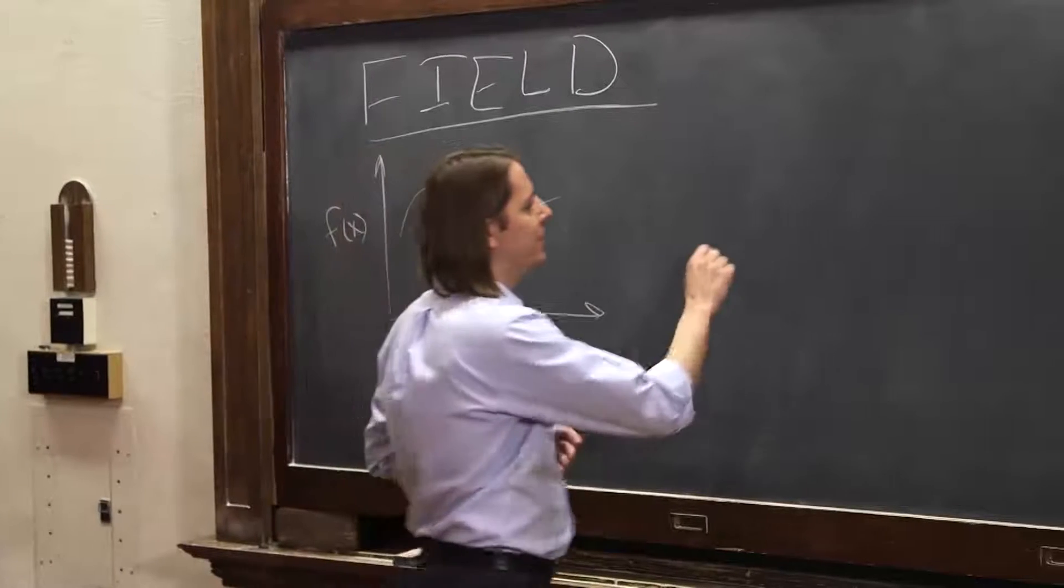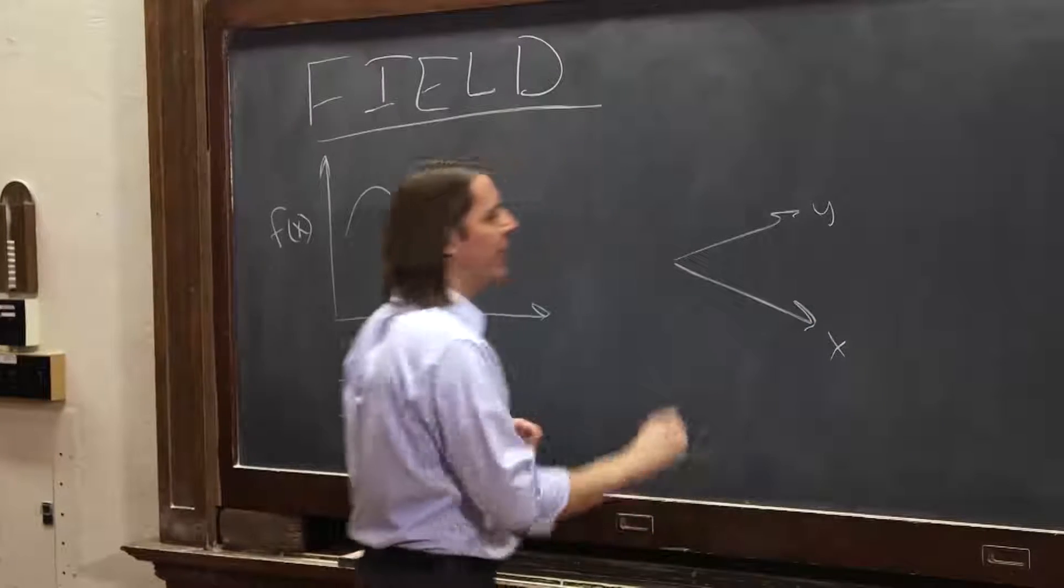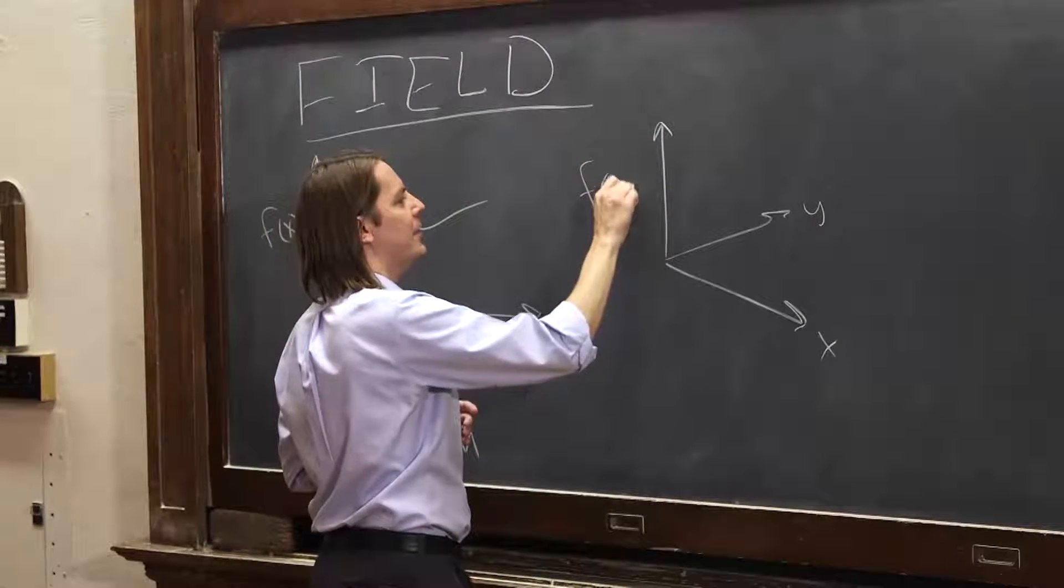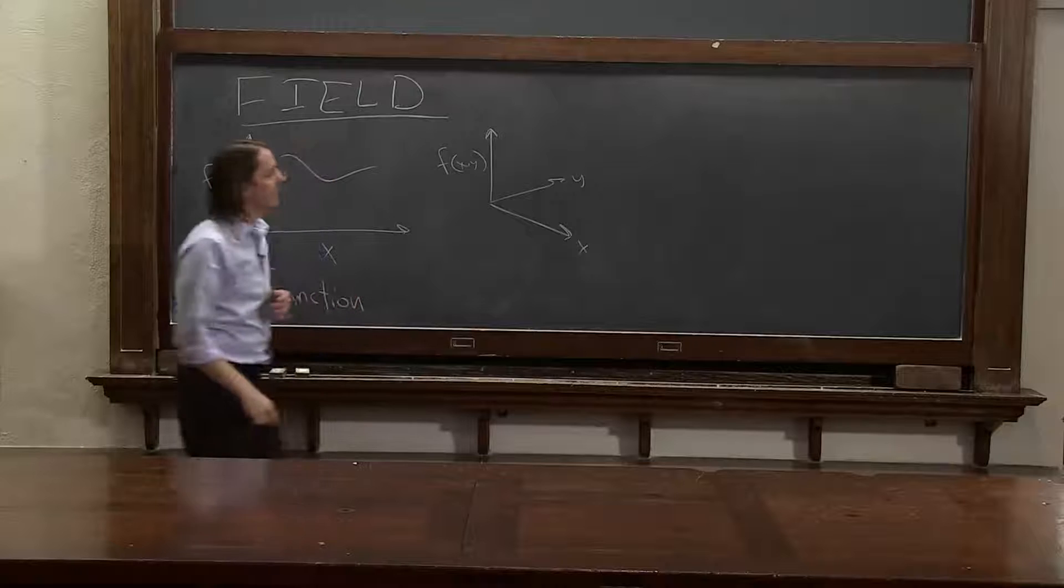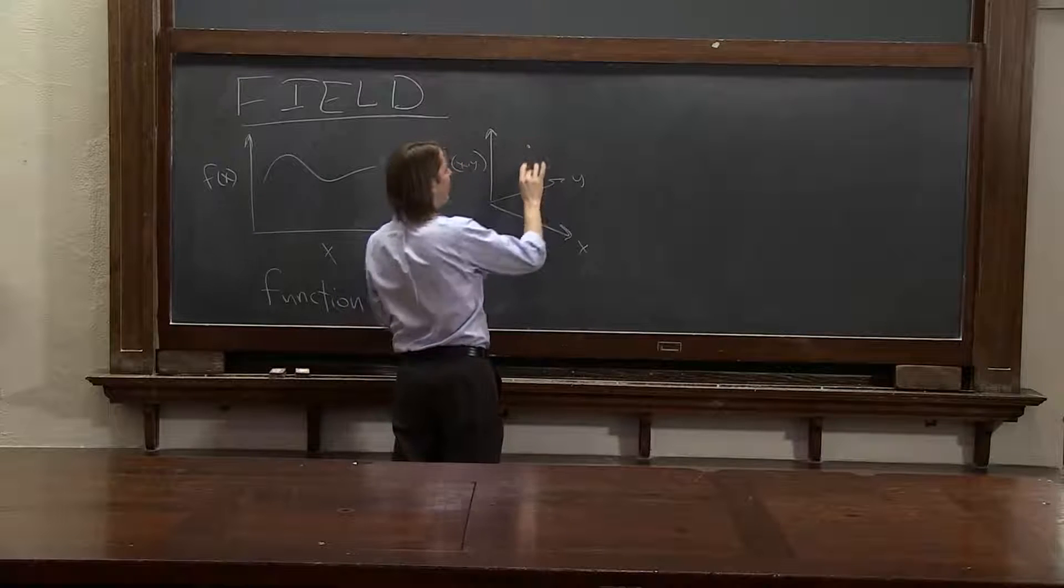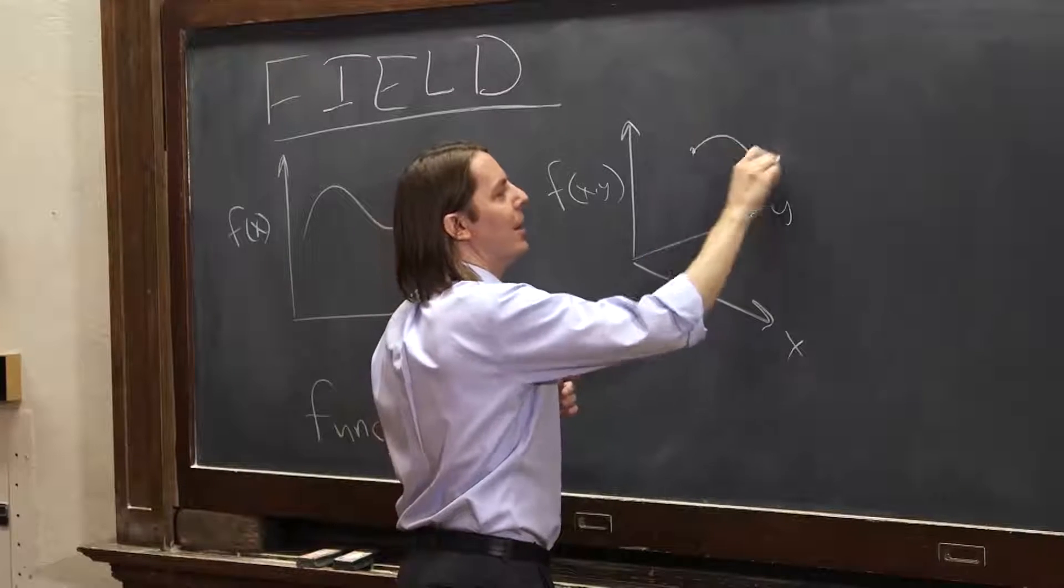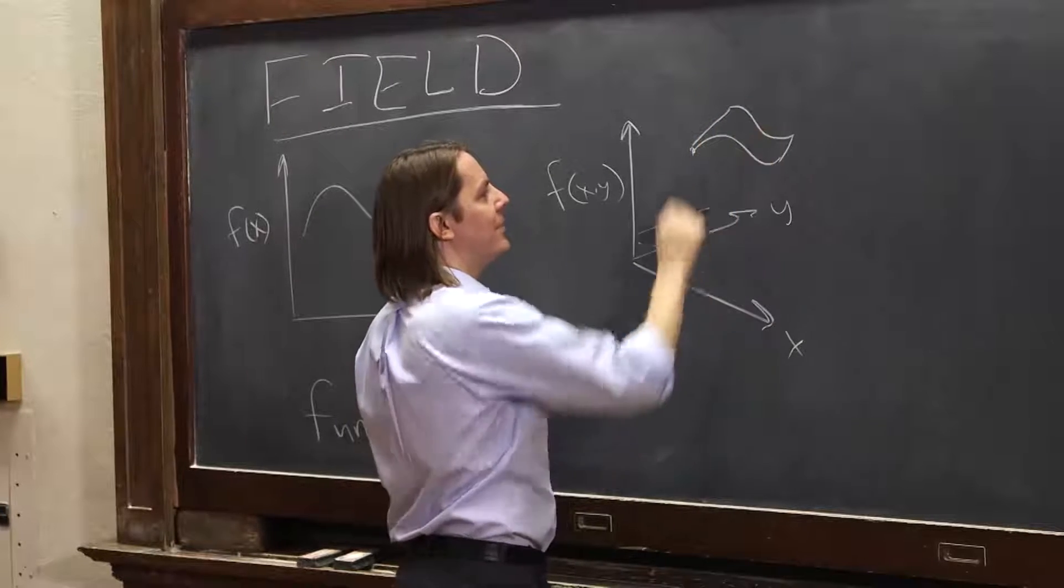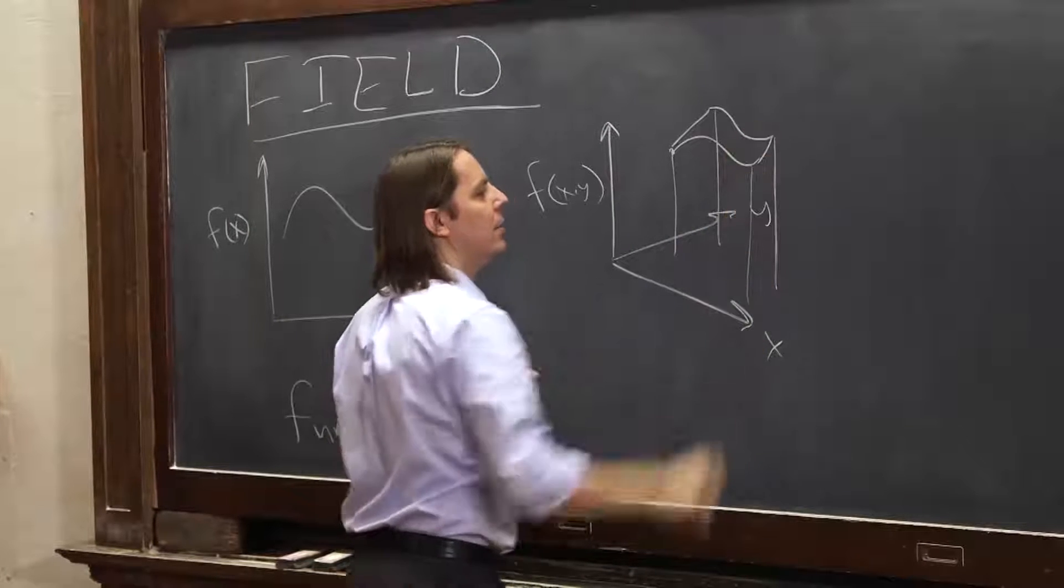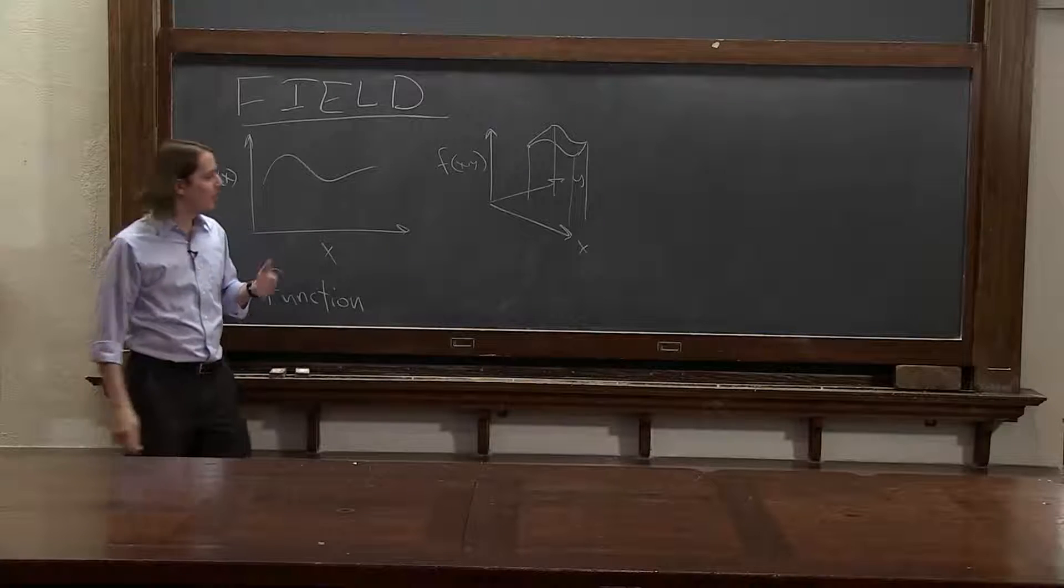What if we had a function of two dimensions? Here's y, here's x, but we could still plot f here. And it would be f of x and y. For each x and y, there could be a unique f. And if I plotted it, its height is f, just like I did here. But in two dimensions, it might look kind of like that. It might have a nice little shape like that, where each point here has a corresponding x and y. So what is that? That's a function in two dimensions, but I would call that a field.